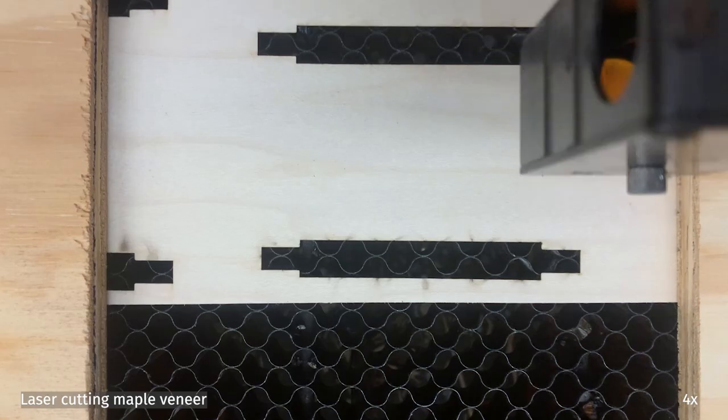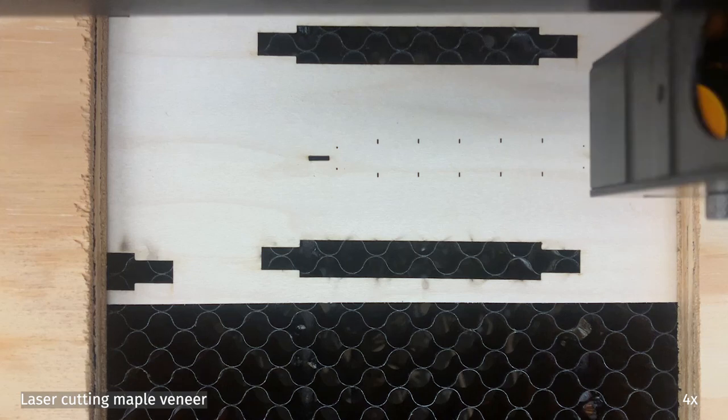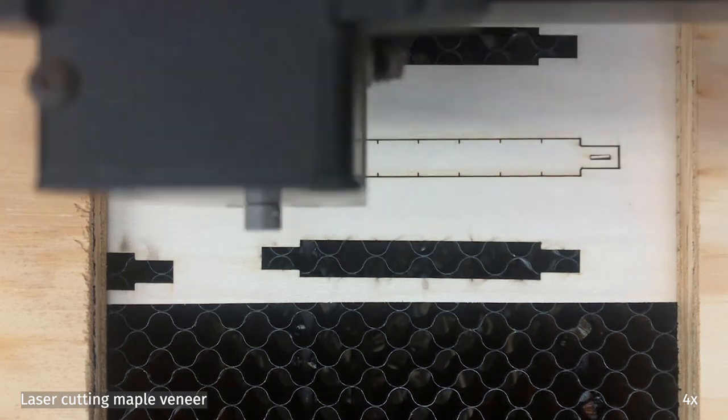Fabricating XL actuators involves four steps: laser cutting, chemical processing, folding, and drying. Actuator blanks are laser cut from 0.5mm thick flat-sawn maple veneer.